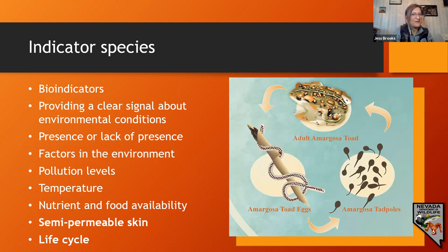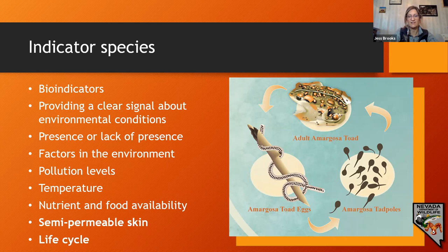On your screen is a picture of a life cycle. We define an indicator species — also called bio-indicators — as an organism whose presence or lack thereof provides a clear signal about the environmental conditions and how healthy the overall environment is.